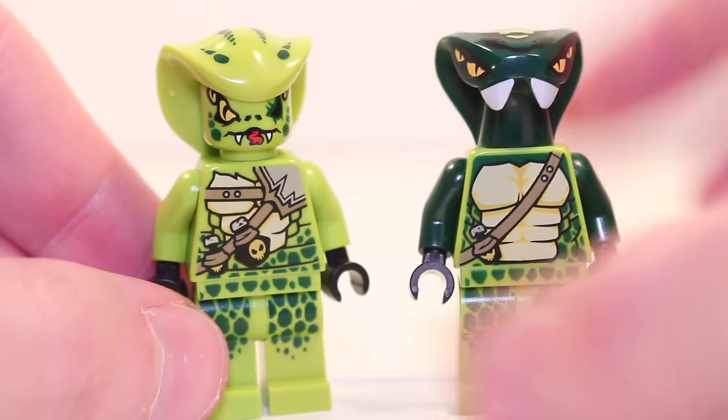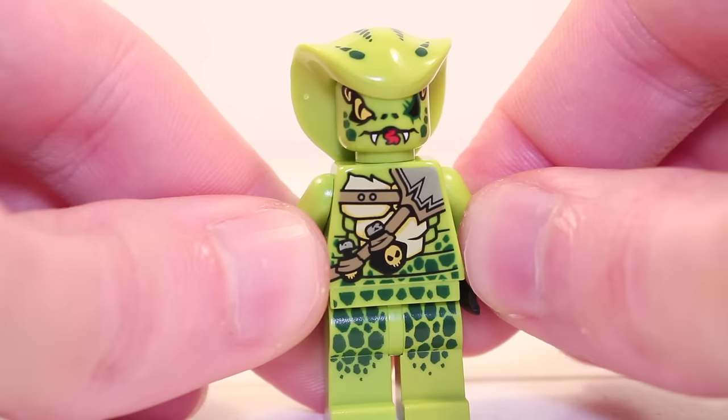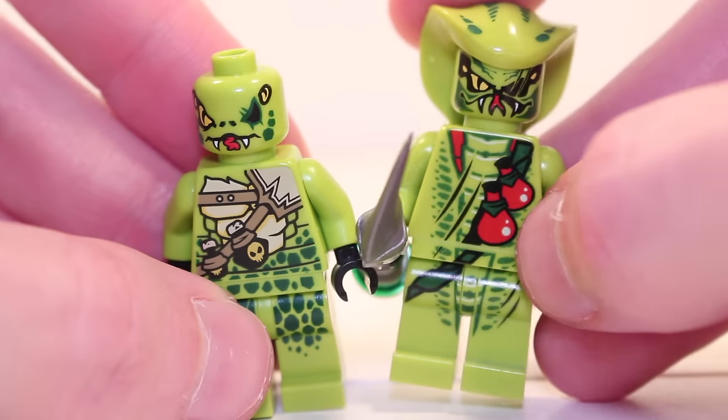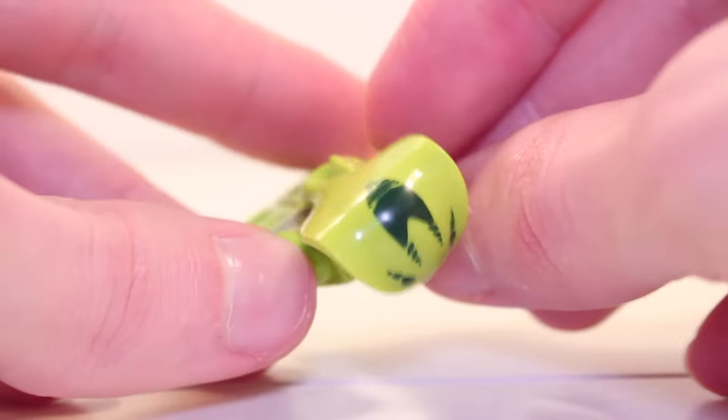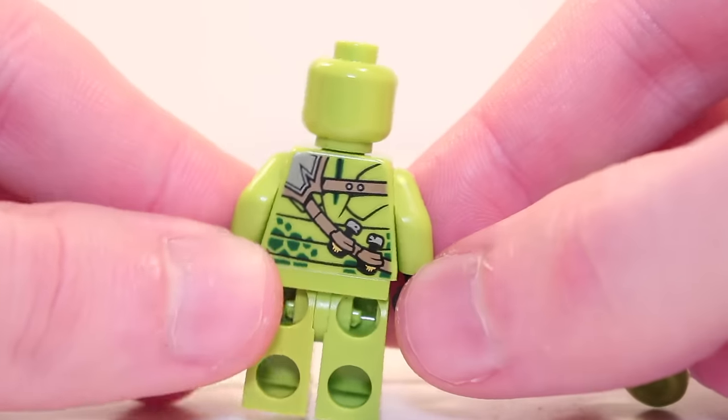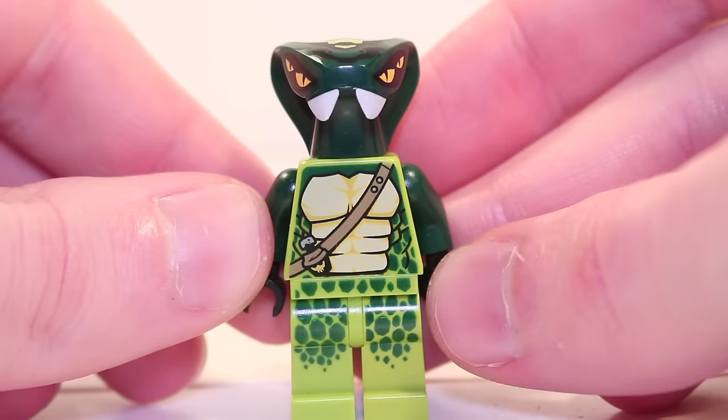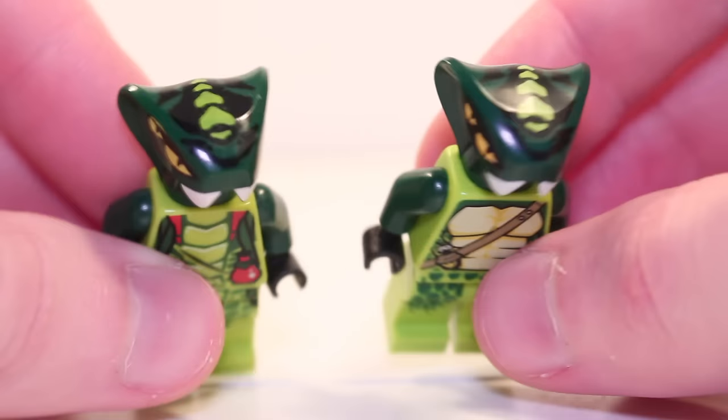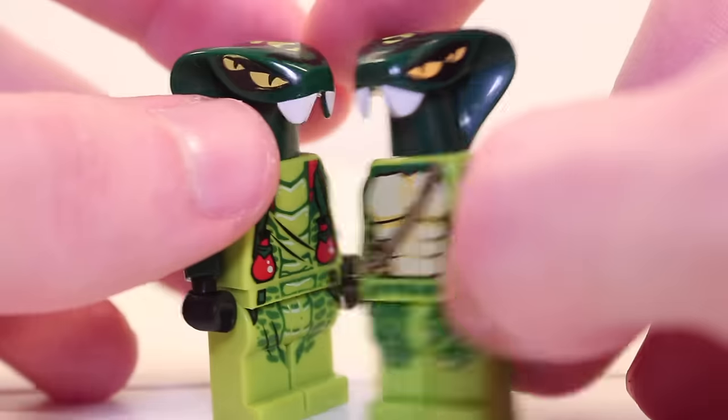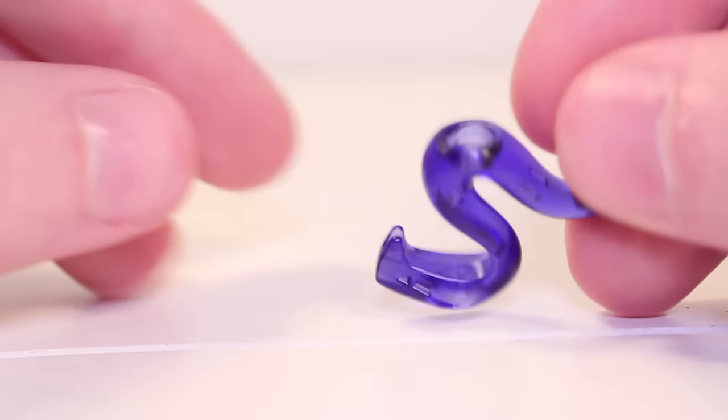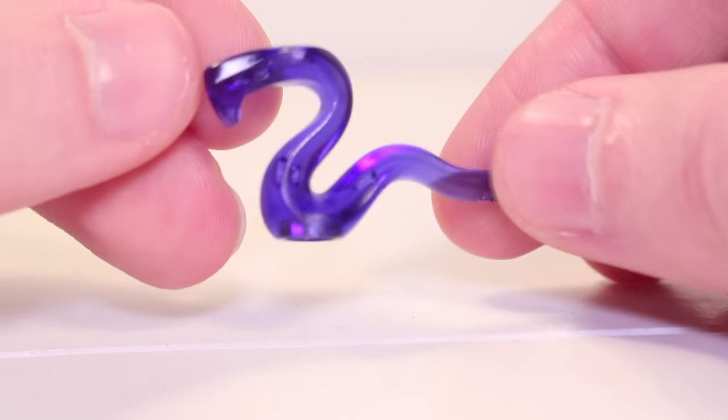The Venomari returned yet again in 2019 with Lasha and Spitter getting Legacy remakes. Lasha is now very different to the original, with the red bottles being changed for black bottles and a very different face print. Thanks to magazines, this is also the most common serpentine minifigure ever released, coming in 8 sets. Spitter is much more similar to his original, as he simply reused the same face print, but his torso also has some differences. The Venomari had some green vipers and a trans purple viper too, which would work well as a baby Anacondrai.